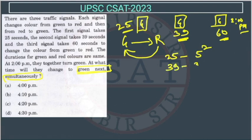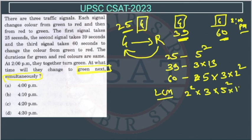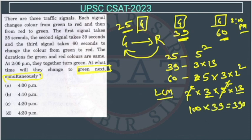So I'm finding the prime factors. 25 is 5 squared. 60 is 5 into 12, and 12 is 3 into 2 squared. So the LCM will be 2 squared into 3 into 5 squared into 13, which gives us 4 into 25 into 3 into 13 — that is 100 into 39 — so the LCM is 3900 seconds. They will all become red simultaneously at 3900 seconds.